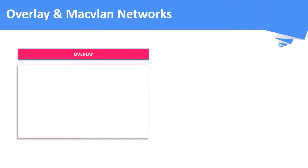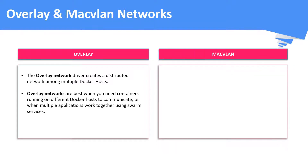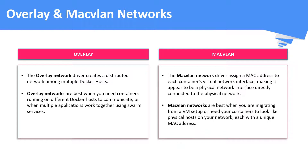Next is the overlay network. When you want containers running in different Docker hosts to communicate with each other, you should use the overlay network. The macvlan network assigns a MAC address to each container connected to it, making the container look like a regular physical network interface connected to the physical network. Note that overlay and macvlan networks are out of scope for this video.